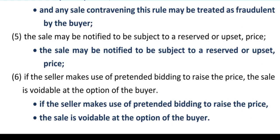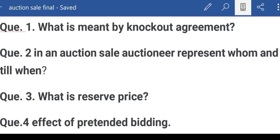Examination में auction sale पर objective questions और descriptive questions पूछे जाते हैं — LLB और judiciary दोनों के perspective से। Important questions हैं: what is meant by knockout agreement, in an auction sale the auctioneer represents whom and till when, and what is reserve price and effect of pretended bidding। इन चारों सवालों के जवाब हमारे discussion में मिले हुए हैं।